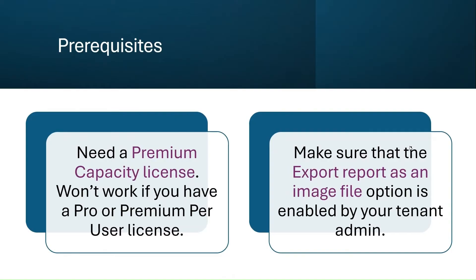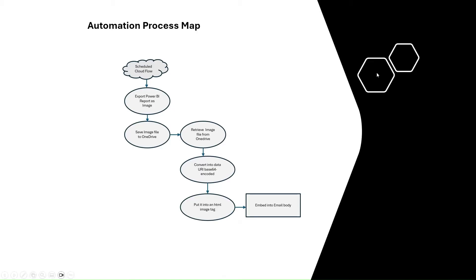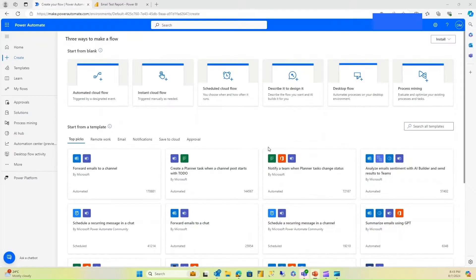Let's look at the automation process map. We are going to first create a scheduled flow in Power Automate. After that, we will export the Power BI report as an image, then save that image to OneDrive. The reason for saving to OneDrive is that the Power BI export-to-file feature doesn't save in any particular file format — even though you're exporting as PNG, it saves without the PNG extension. So we need to manually specify that. After that, we'll retrieve the file from OneDrive, convert it into Base64 encoded format, put it into an HTML image tag, and embed that in our email body.